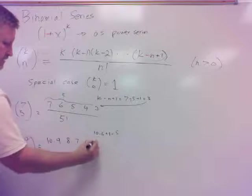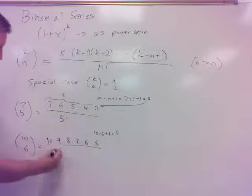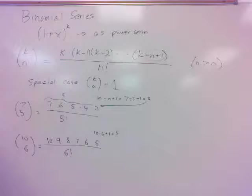And k minus n plus 1, which in this case would be 5. So I need to go 2 more. And notice that is 1, 2, 3, 4, 5, 6 numbers. That's just an interesting little point there.